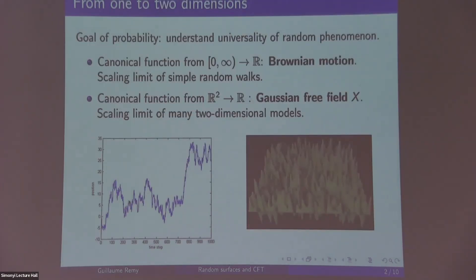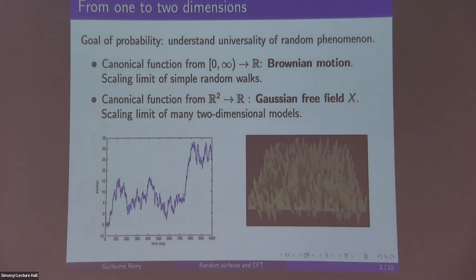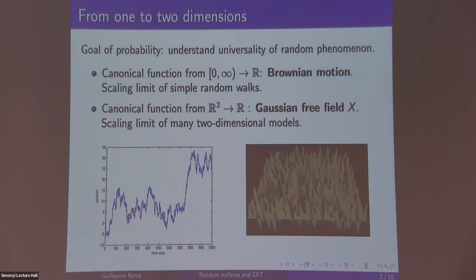To introduce this topic, the goal of probability is to understand the universality of random phenomena. For instance, if we look at functions in one dimension, there's the Brownian motion, which is like a canonical random function.